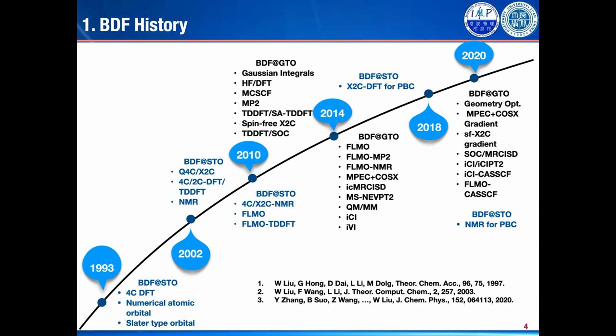From 2014 to 2018, we developed the FMR code and also introduced MPEC and COSX into BDF-STO. In Xi'an, we developed all kinds of internally contracted MRCI based on the whole-particle GUGA theory, and also developed some multi-state NEVPT2 code.